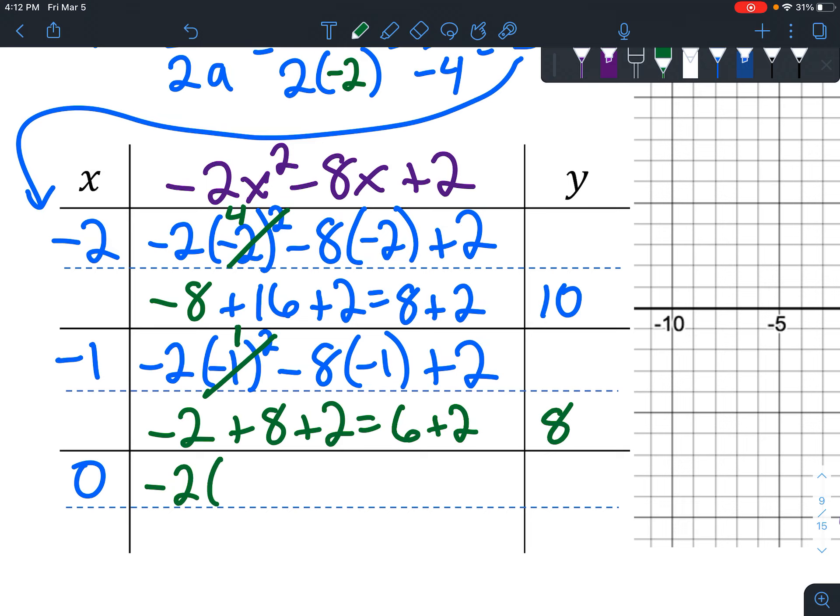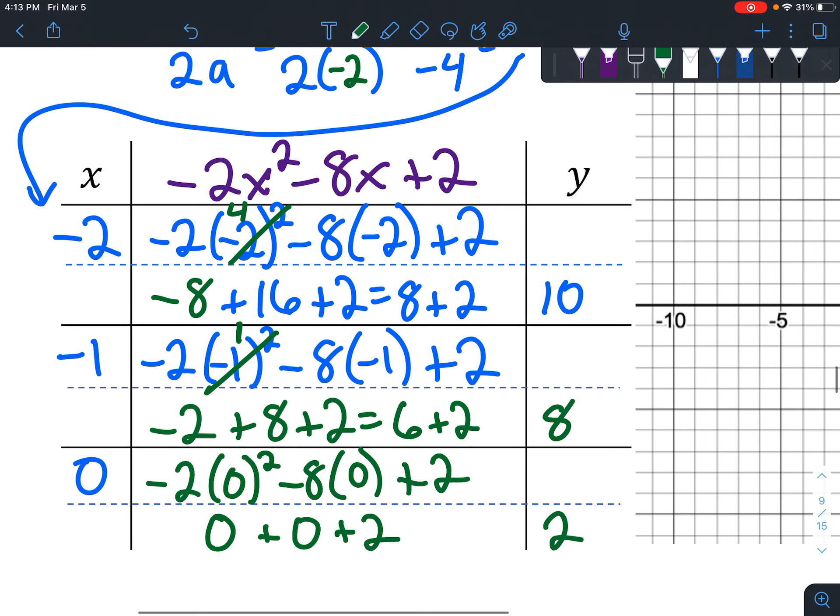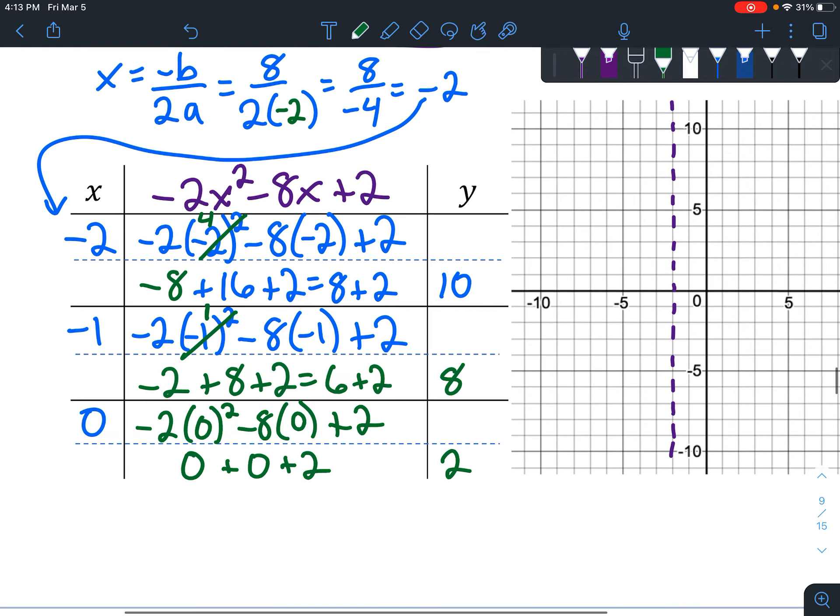Woohoo! Bonus! We've got a 0 to graph. So negative 2 times 0 squared minus 8 times 0 plus 2. This becomes 0. This becomes 0. And then when you add 2 to nothing, you get 2. Okay. Let's graph this.